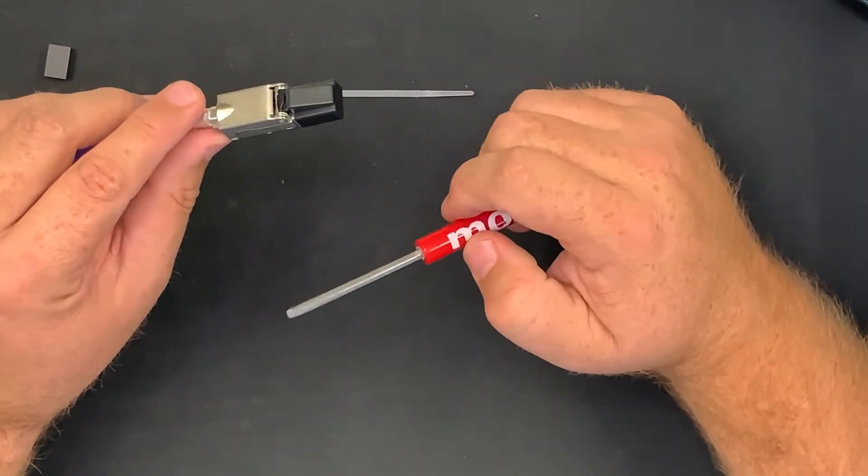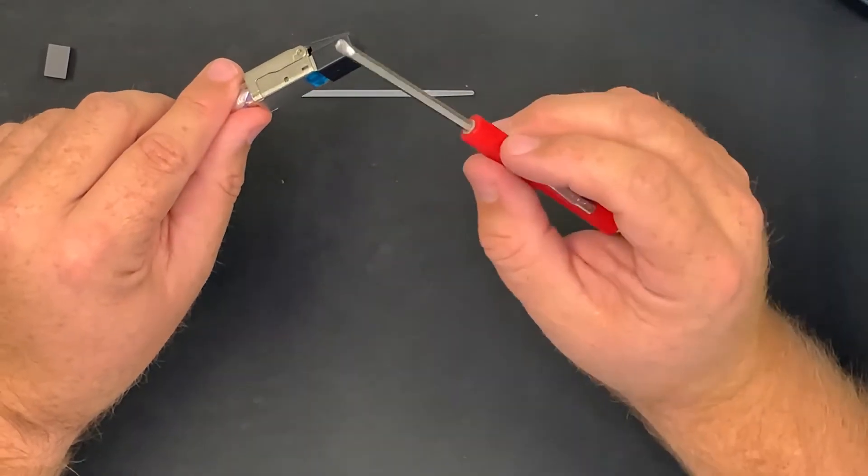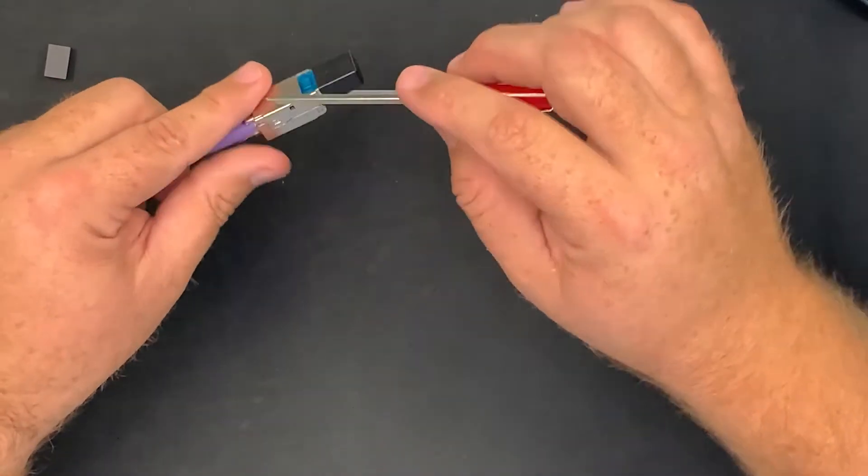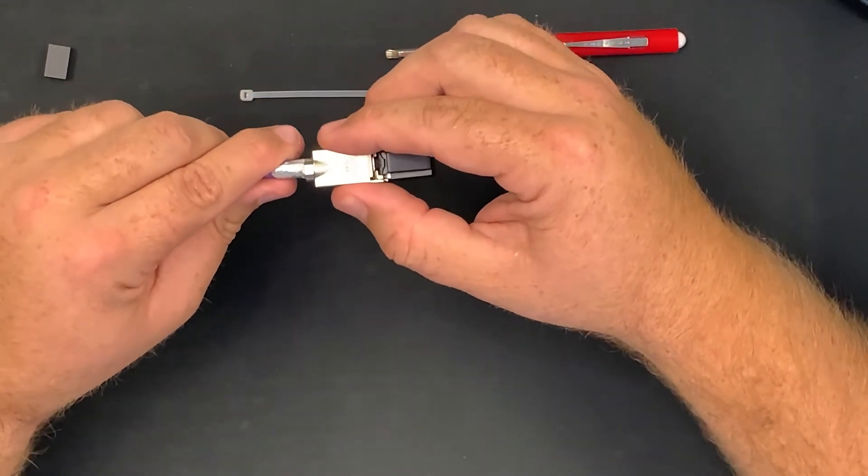Now, if you made a mistake, you can re-terminate this connector. You just take a screwdriver. Loosen it up there. And on the other side. You open it up. And you can re-terminate.